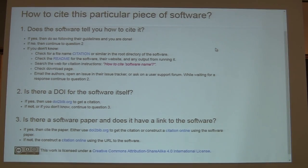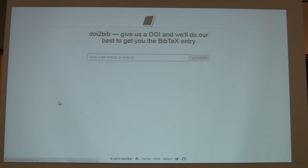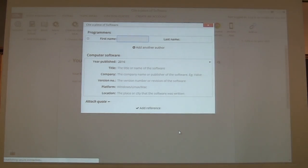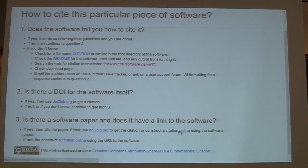First of all, we explain how to find where a potential citation may be hiding. If you have a DOI, this is pretty easy — there's a tool that will allow you to create a citation from it, though we didn't create that tool ourselves. But if there's no DOI, we provide another tool that will construct the citation online. We also point out that if there's a paper attached to the software with a link to it, you should probably cite the paper.